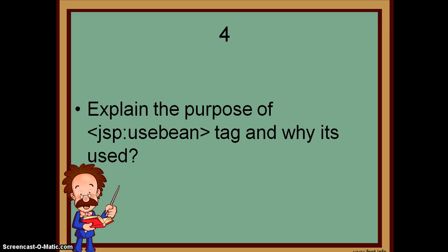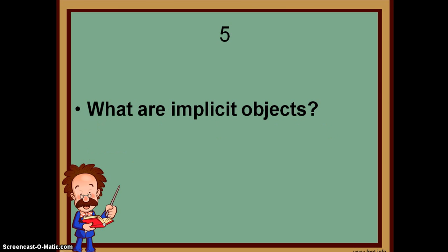Fourth question, explain the purpose of JSP use bean tag and why it is used. Fifth, what are implicit objects?